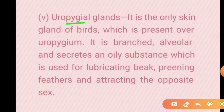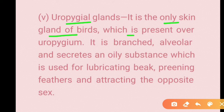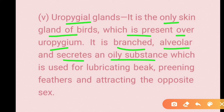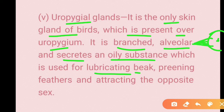The uropygial gland is the only skin gland of birds. These are branched, alveolar glands that secrete an oily substance which lubricates the beak of birds. The bird uses this secretion to preen its feathers and keep the skin moist. It is also useful in attracting the opposite sex.